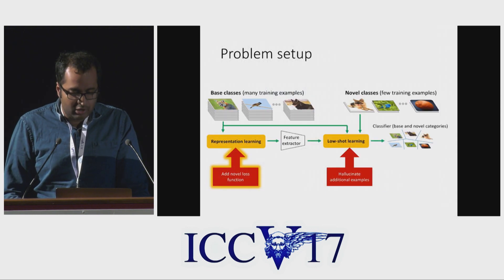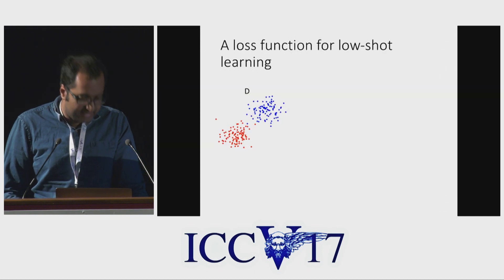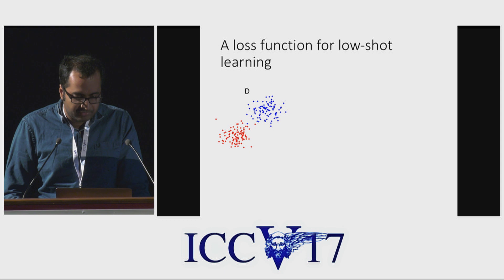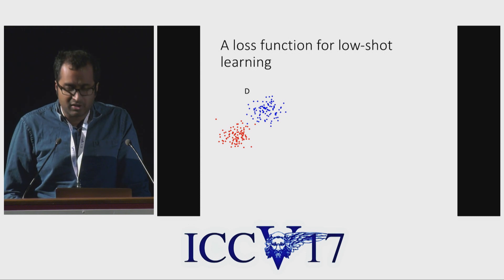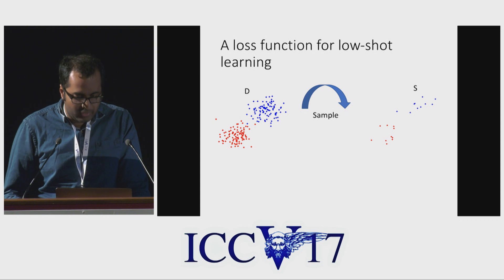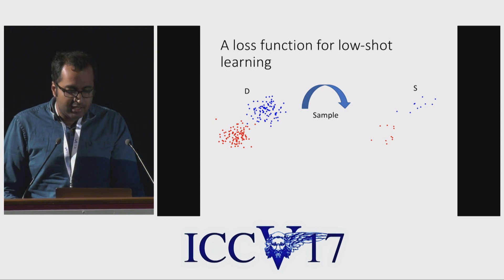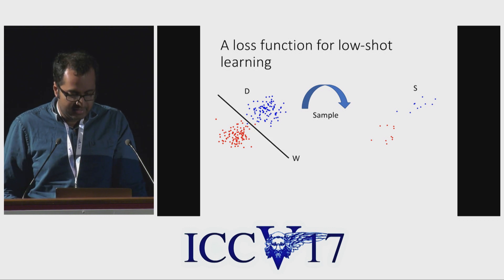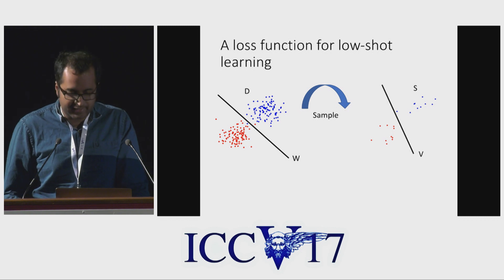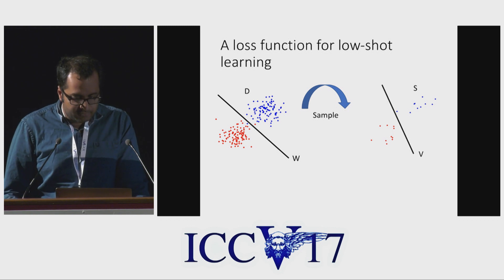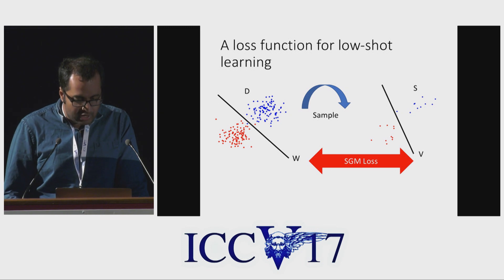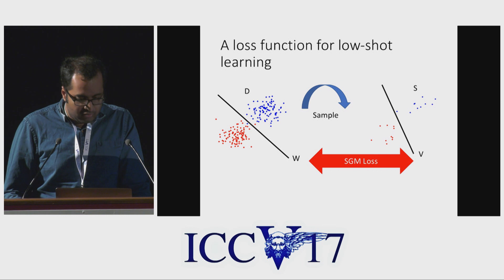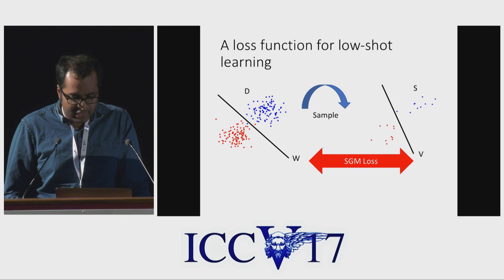We also present a novel loss function that produces feature representations better suited for low-shot learning. Consider the dataset of base classes D on which we are training our convolutional network — this dataset has thousands of examples per class. During representation learning, we sample small training sets S out of it, consisting of very few examples per class. In general, the classifier W trained on the large training set can be very different from the classifier V trained on the small training set. We propose a loss function that tries to pull these two classifiers closer together, thus encouraging classifiers trained on small training sets to be similar to those trained on large training sets. We also show that our loss is very similar to an L2 regularization of feature activations.